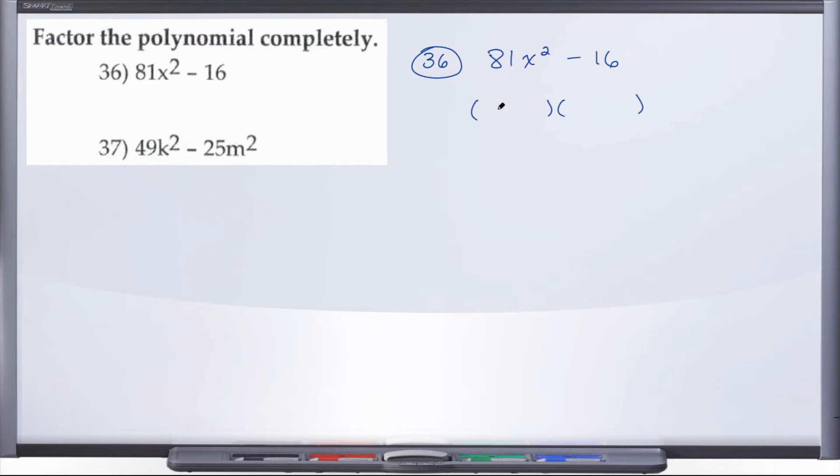What is the square root of 81? Nine. And we're dealing with x, so x and x. What is the square root of 16? Four, so 4 and 4. Then we do plus and minus and we have our factored form: (9x + 4)(9x - 4).